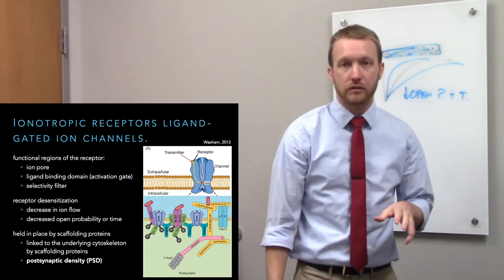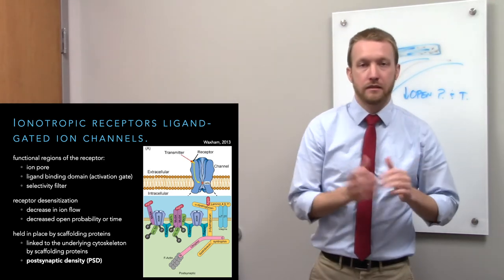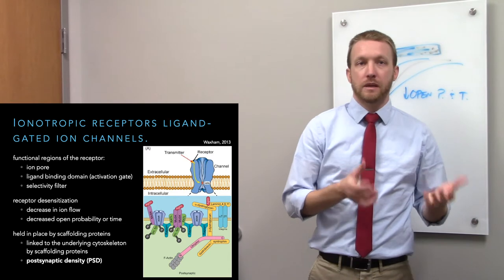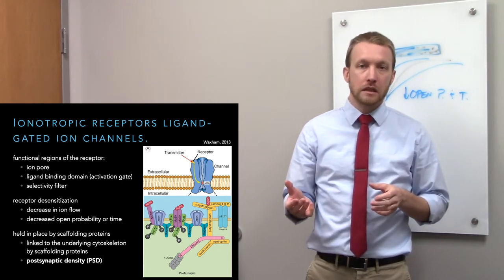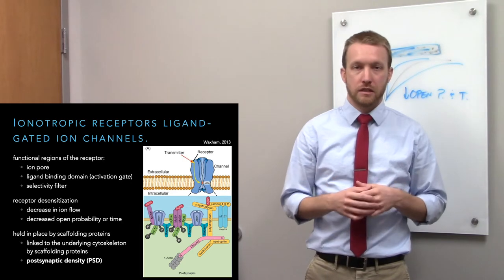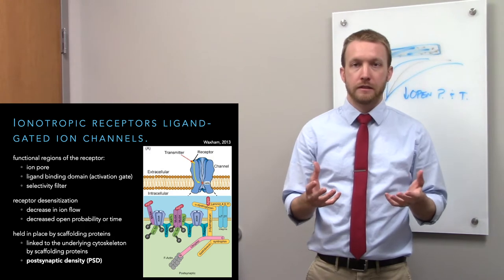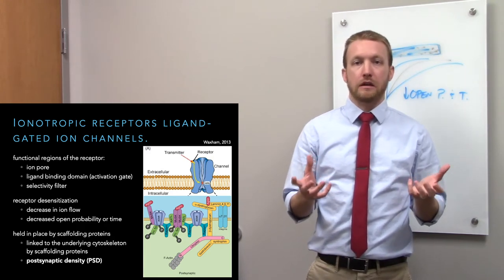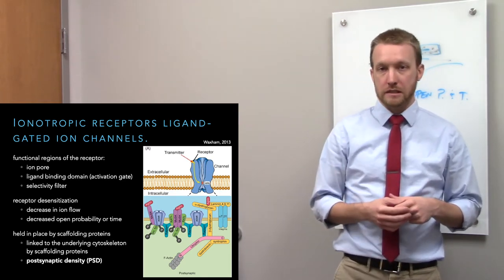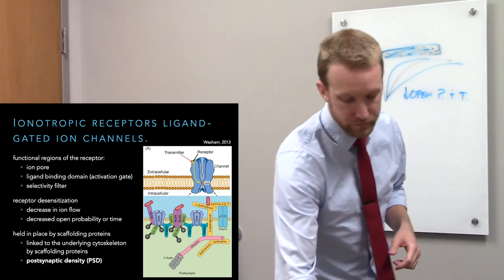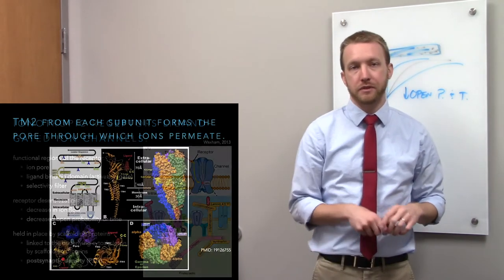All ionotropic receptors have scaffolding proteins to hold them in place at the synapse. Different neurotransmitter receptors use different scaffolding proteins, and they are all linked to the postsynaptic density — the collection of cytoskeletal proteins, adapter proteins, and scaffolding proteins that hold neurotransmitter receptors immediately opposed to the presynaptic site. This is common to all receptors, though there are slight differences between them.